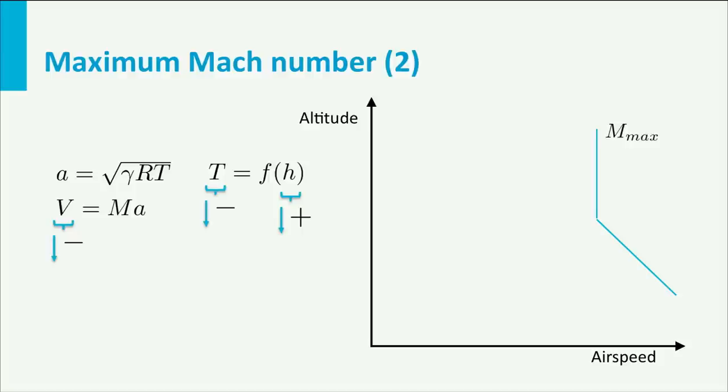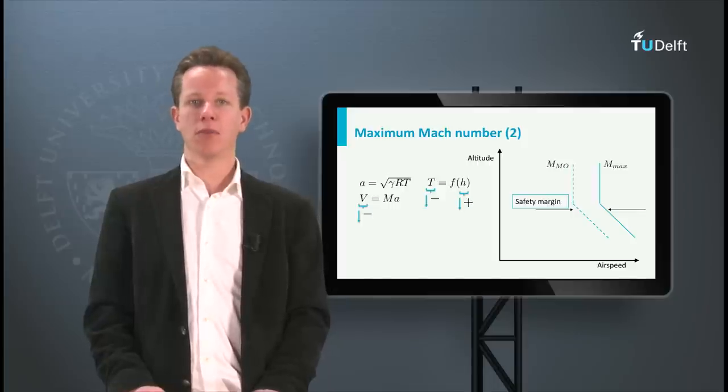Again, in order to be on the safe side, a small safety margin has been defined by the regulatory bodies with respect to the design maximum Mach number. This limit is called the maximum operating Mach number.